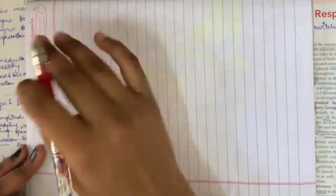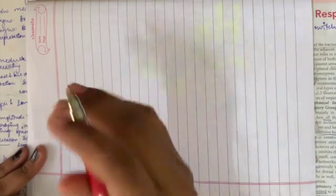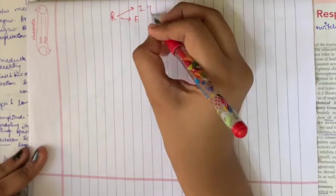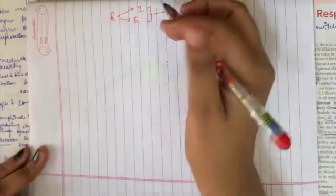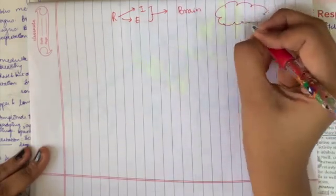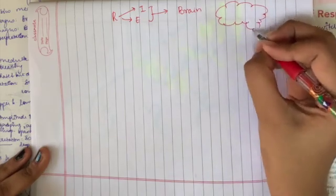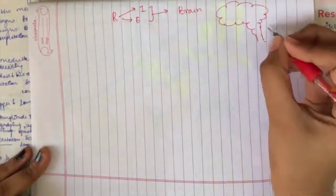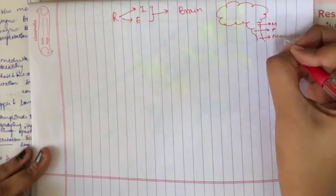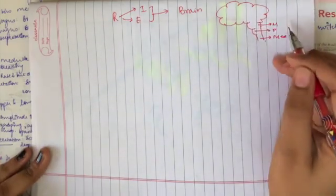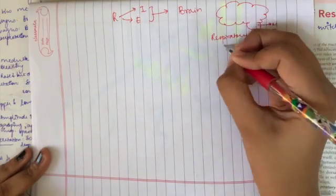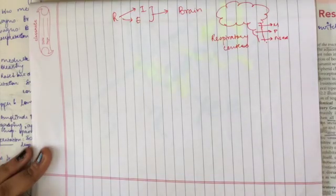Let me give you some basic idea about what we're going to learn. As you know, respiration includes inspiration and expiration, and these two processes and their rates are controlled by our brain. This is our brain stem — it has a midbrain, it has pons, and it has medulla.